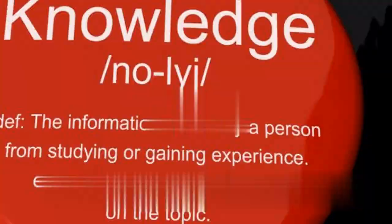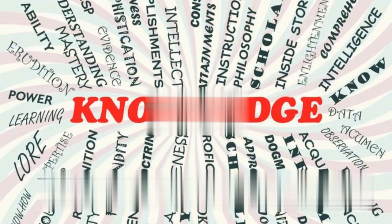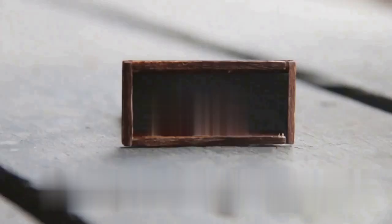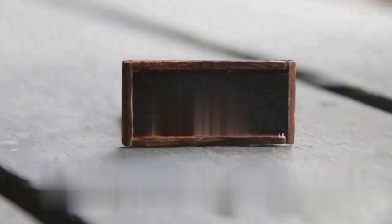But what does this mean for us, for society at large? It means that knowledge, in the postmodern condition, is not neutral. It's not just about facts and figures, but about who controls those facts, who decides what knowledge is valuable and what isn't. This commodification of knowledge creates a power dynamic, a disparity between those who have access to knowledge and those who don't.